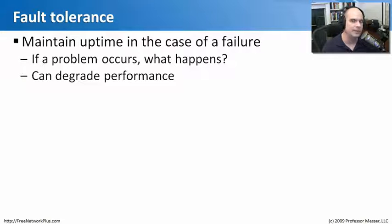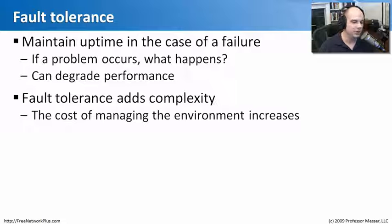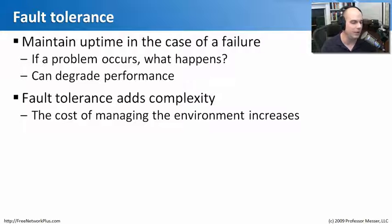When a problem occurs, does the network fail over to a completely separate set of equipment? Do we have a separate power supply in case one fails? There could be a performance problem — if everybody sharing a link has to fail over, you've put twice the load on the remaining link. So this doesn't always mean things will run perfectly during a fault. Fault tolerance also adds complexity, and there are technologies and protocols that handle failover properly, but there's a cost involved.